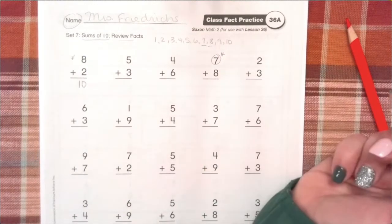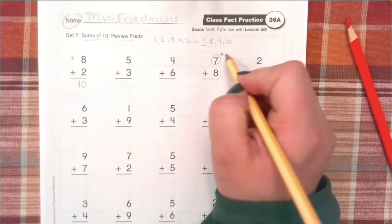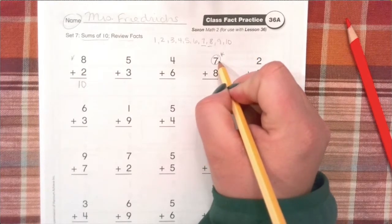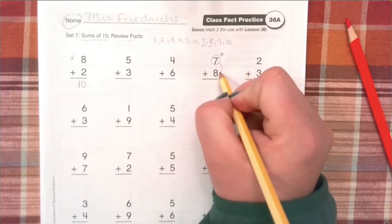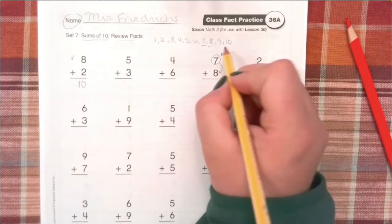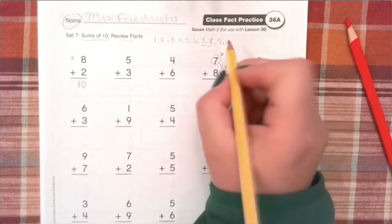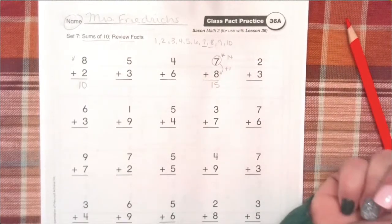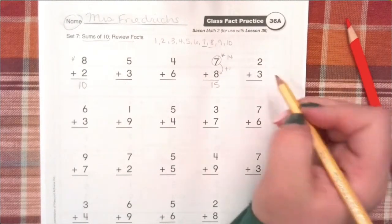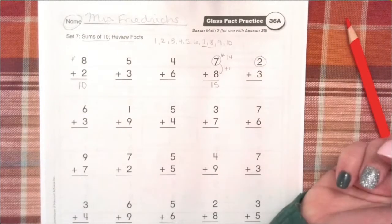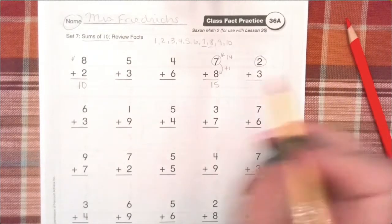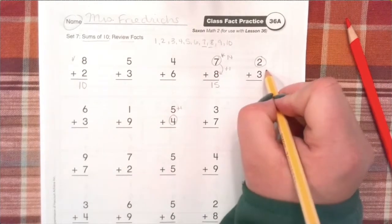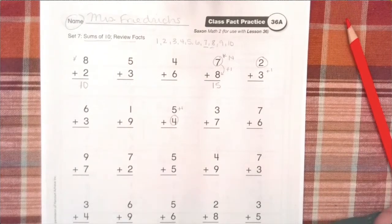I take my smaller number, circle the smaller number, and that's the one I have to double. 7 plus 7 is 14. Now, because they're next to each other and 8 comes after 7, I have to add one more to 14. So 14 plus 1 is 15. Any time you have a double plus 1 fact, go ahead and circle that smaller number that reminds you that that's the number you have to double before you add one more to that answer.